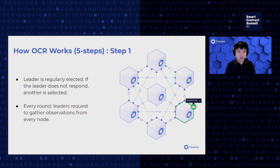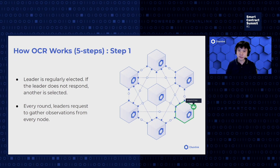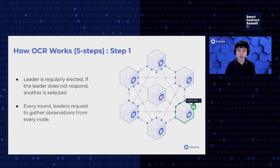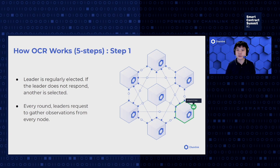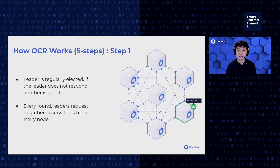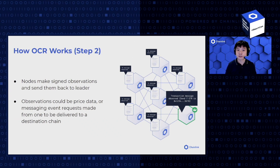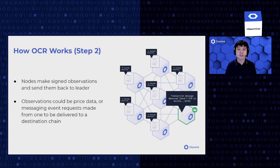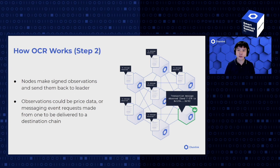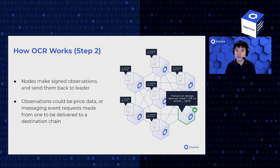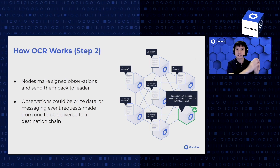How does OCR work? First, a leader is selected at random to facilitate communication. If the leader does not respond or goes down, then a new leader is selected. The consensus algorithm then operates over sequentially increasing rounds, starting with the query stage where the leader requests observations from every node. In response, nodes make observations, sign, and send them back to the leader. Observations could be price data, but in the case of cross-chain, there will be token movements and messaging events made from one chain with a request to deliver them to a destination chain.